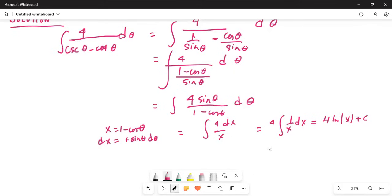Or the final answer is 4 ln of x, and for x I can write 1 minus cosine theta. That's your final answer, plus C, the integration constant.